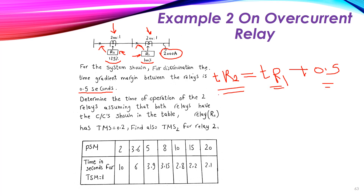So R2 = R1 + 0.5 seconds. What is required? Determine the time of operation of the two relays, assuming that both relays have the characteristics shown in the table. You can see here the plug setting multiplier values and the time in seconds at TSM equal to 1. We need first the time of both relays.